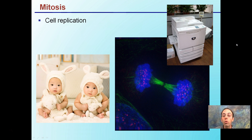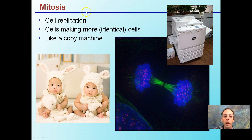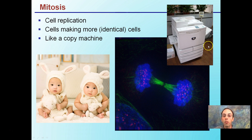Starting with mitosis, it is involved with cell replication — cells making more identical copies of cells. Identical is the key word here. If we're not having identical copies, we have mutations. Like a copy machine, we want to produce as close to the original as possible, so we can ensure the same functions of our cells.